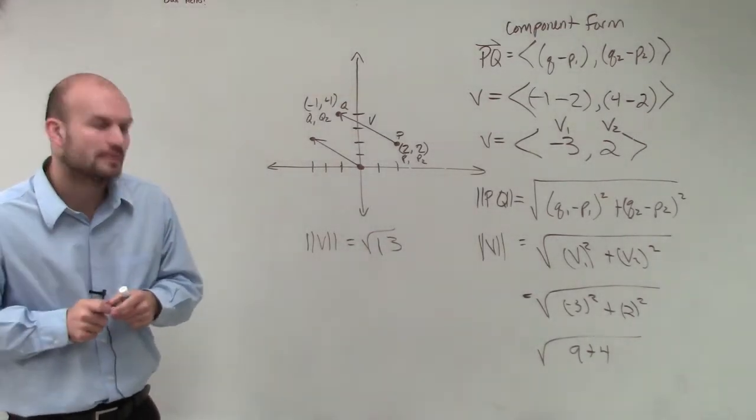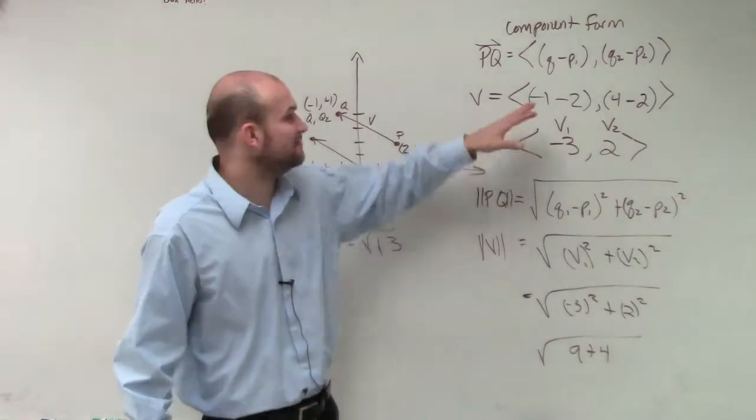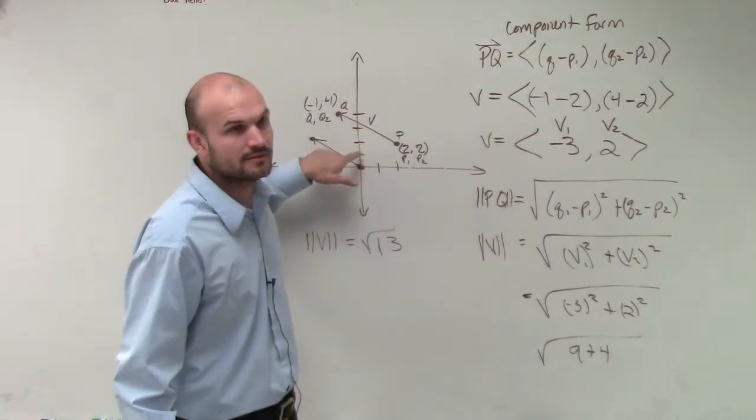Are we finding V or V? OK. PQ is the same thing. V is just the name of my component form of my vector. OK?